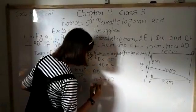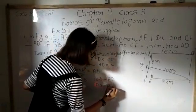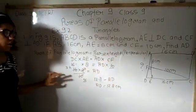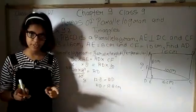So AD equals to 12.8 centimeter. Finally, our question number first is solved. See you in my next video with question number second.